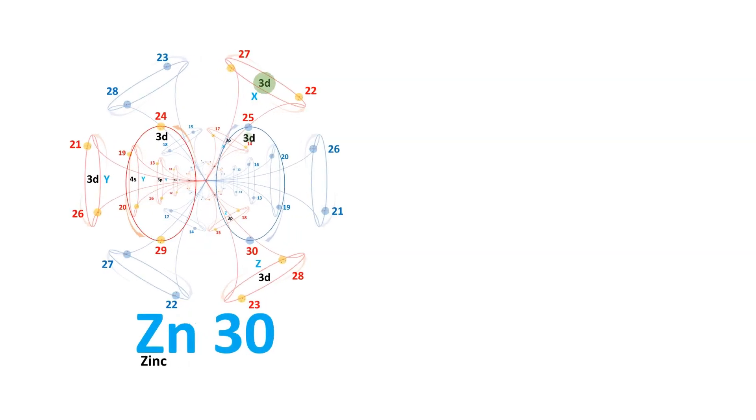Progressing further, the 3d orbitals emerge, encompassing five pentagonal-shaped orbitals. These d orbitals can contain up to 10 electrons and 10 positrons.